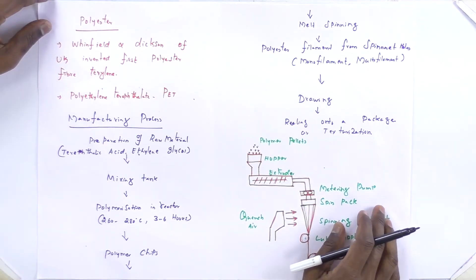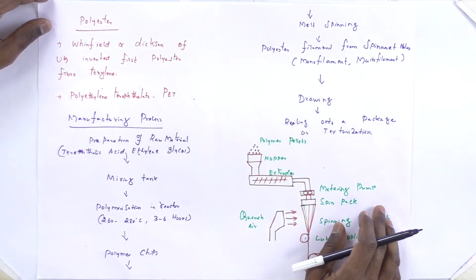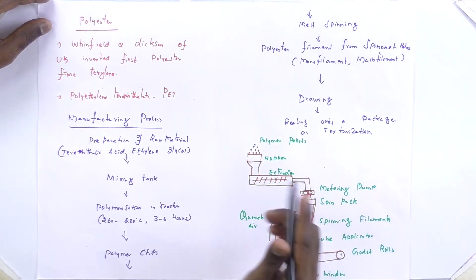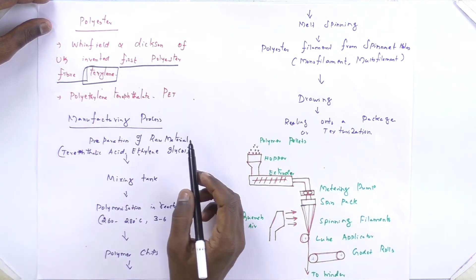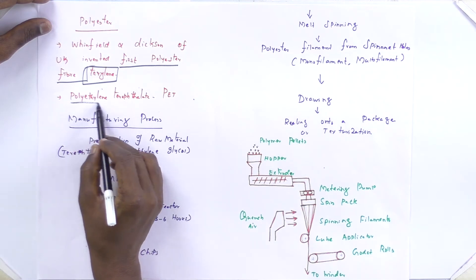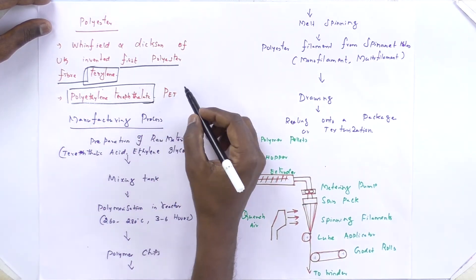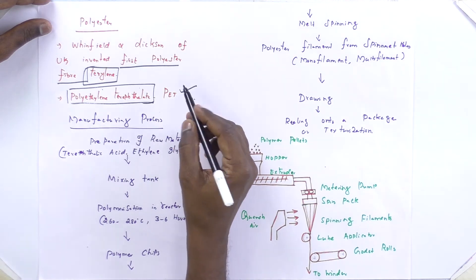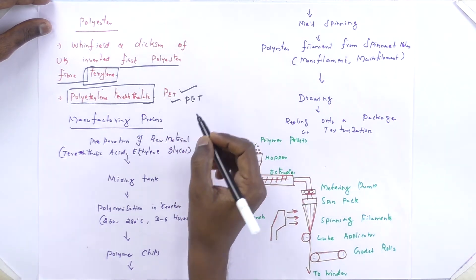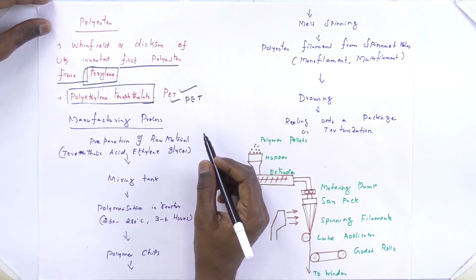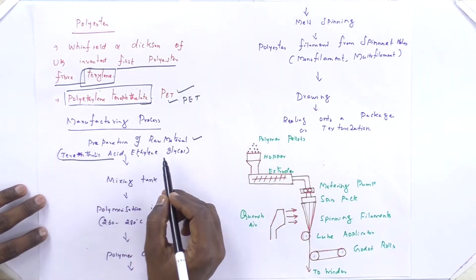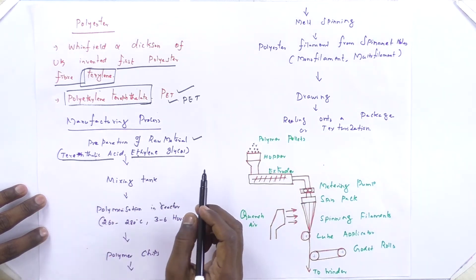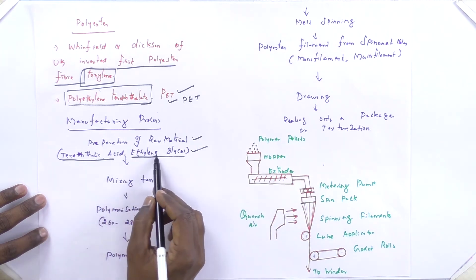The next topic is polyester fiber production. Polyester is a 100% man-made fiber. Winfield Dixon of the UK invented the first polyester fiber, named Terylene. The main monomer for polyester production is polyethylene terephthalate, simply abbreviated as PET. PET fiber is essentially our polyester fiber.